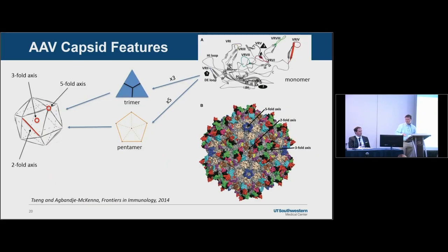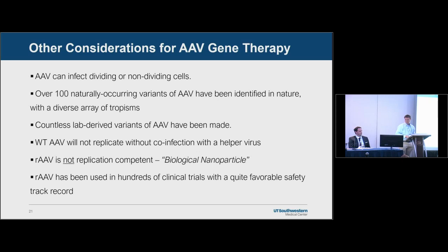A monomer can form a trimer and pentamer, and these come together to form the 60-subunit capsid. Other key considerations: AAV can infect both dividing and non-dividing cells. There are over 100 naturally occurring variants identified in nature, plus hundreds of lab-derived variants. Importantly, AAV will not replicate without co-infection of a helper virus, and recombinant AAV is not replication competent. Samulski coined the term 'biological nanoparticle,' and recombinant AAV has now been used in hundreds of clinical trials with a quite favorable safety track record.